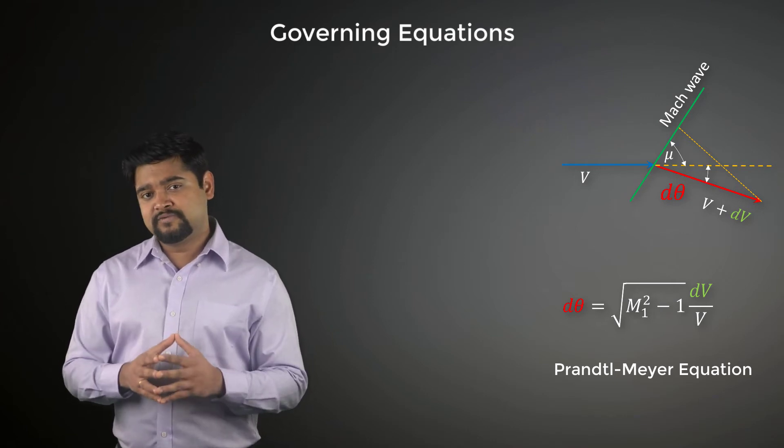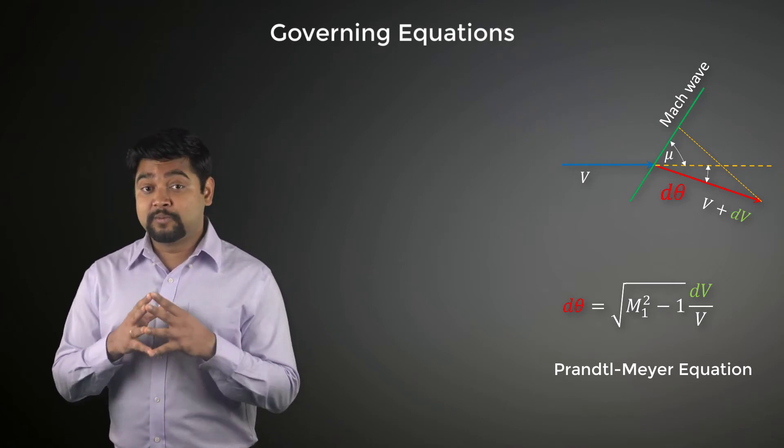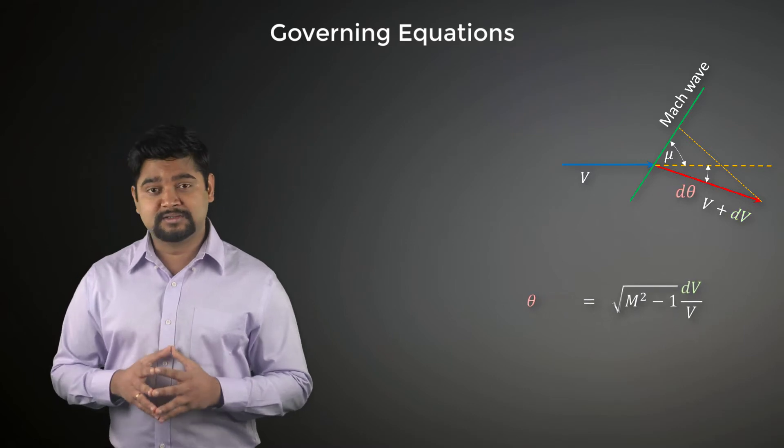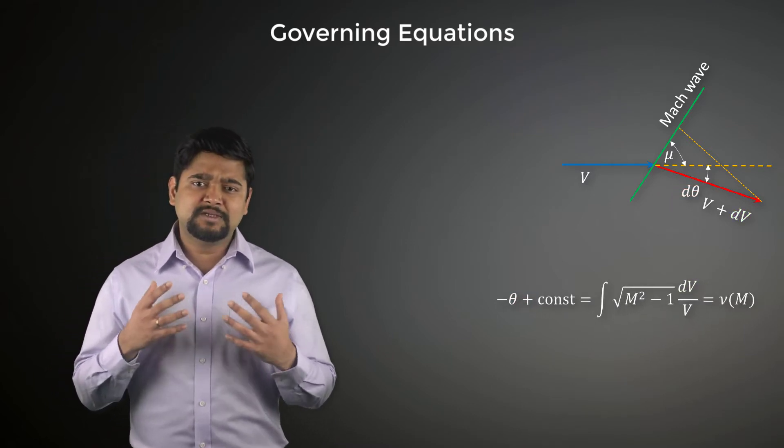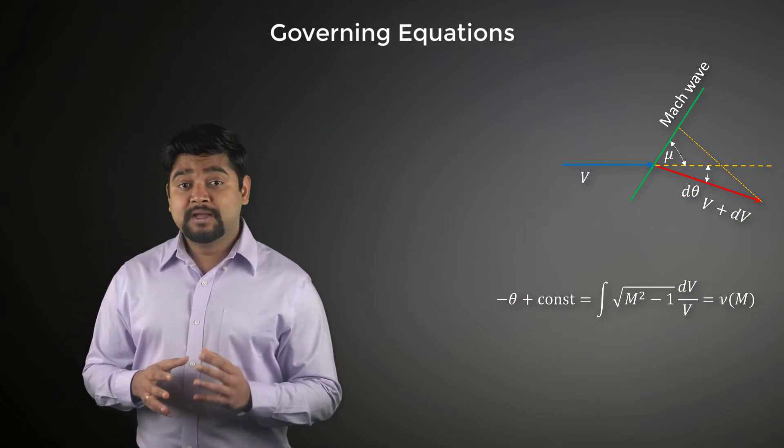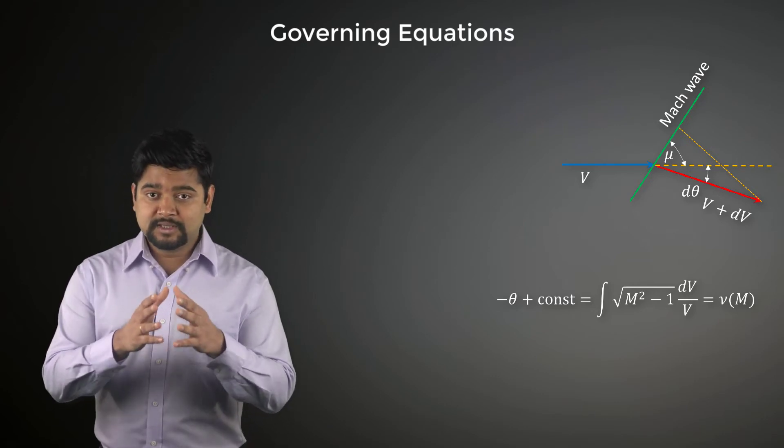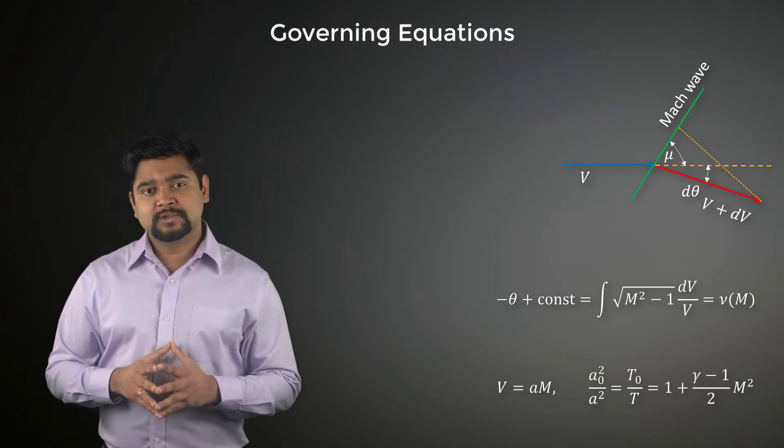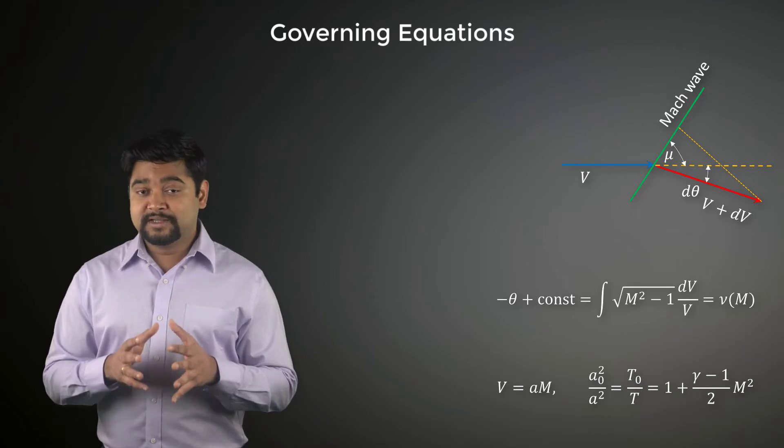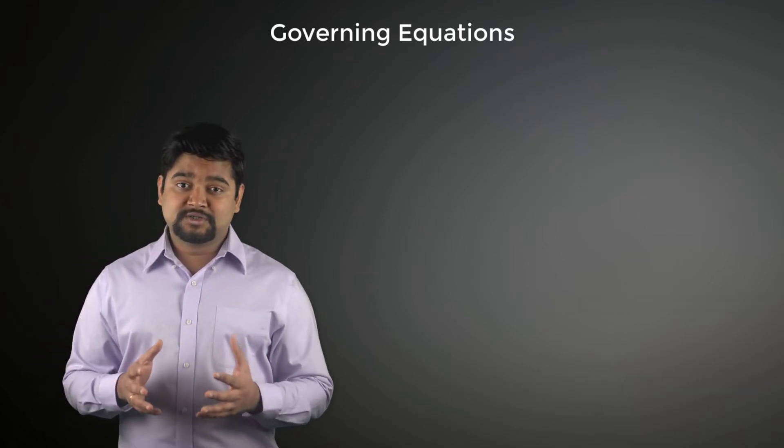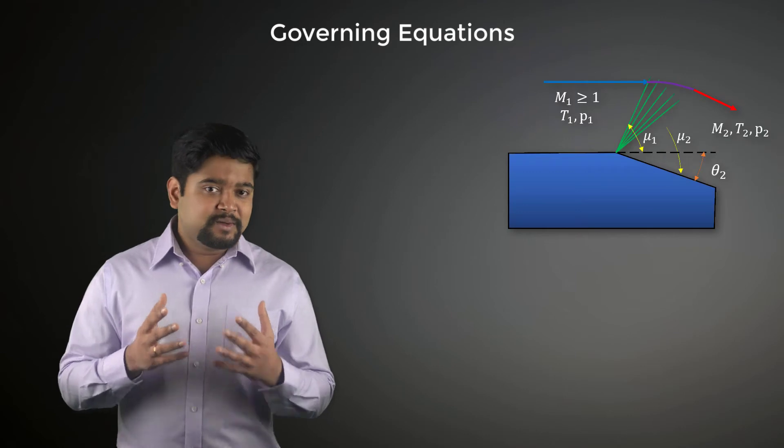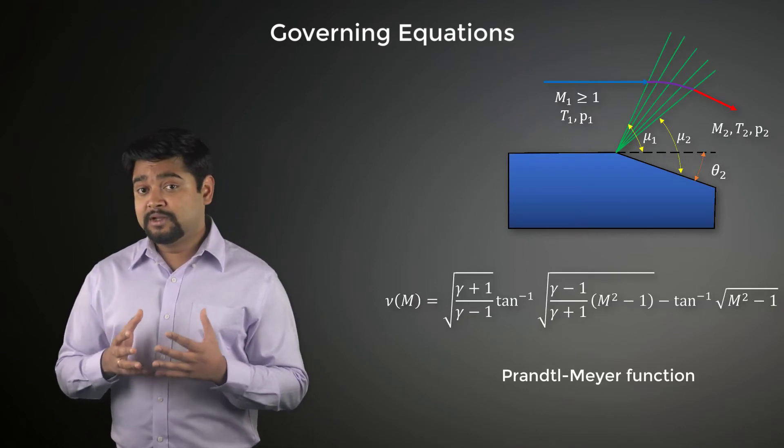A solution for the expansion wave can be obtained by integrating this equation. We can simplify this to obtain an explicit expression for an ideal gas by using these relations. The resulting equation is called the Prandtl-Meyer function and is represented using the Greek symbol nu.